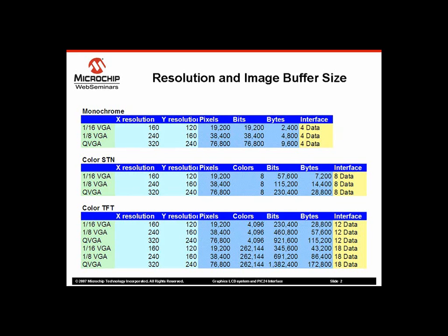In case of monochrome, a pixel has only two settings: on and off. This requires only one bit per pixel. If we look at the 1/16th VGA resolution monochrome display, we need 160 x 120 x 1/8 bytes of image RAM. This translates into 2400 bytes of data RAM for one page of image buffer.